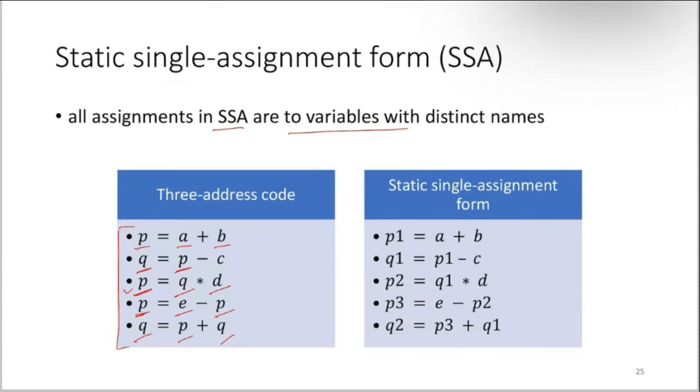then when you are going to analyze or search for some anomaly or bugs, it becomes a little bit confusing. So we go for static single assignment form also. The compiler developer can choose this.